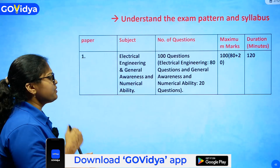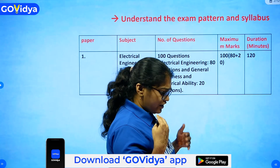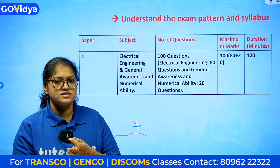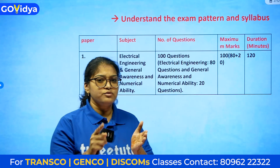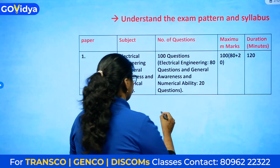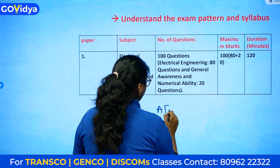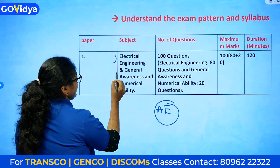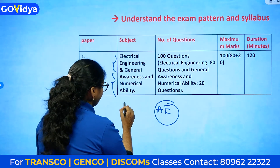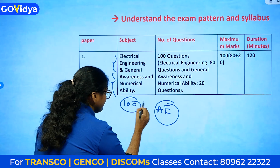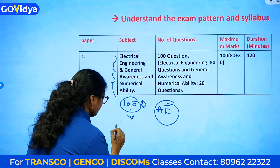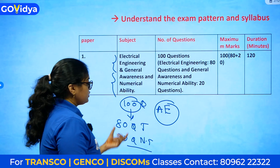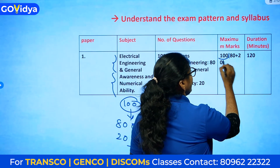Before starting any competitive exam, you must understand the syllabus, number of marks, number of questions, and the time allotted. For the Assistant Electrical Engineering exam, there is a technical and non-technical section. The total is 100 marks with 100 questions — 80 questions are technical and 20 are non-technical.